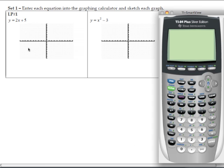So our first equation is y equals 2x plus 5. To enter this into the graphing calculator, press the y equals button in the top left hand corner of the calculator.